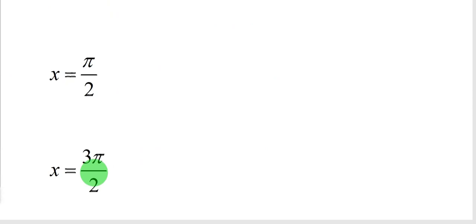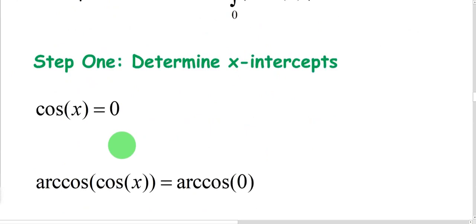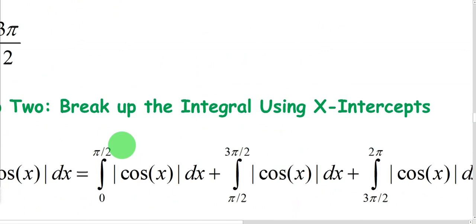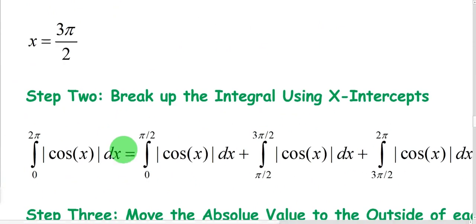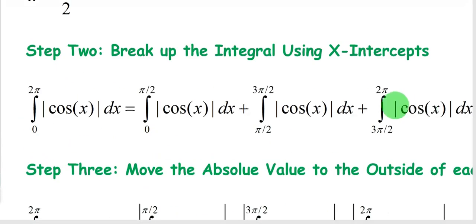So that's where this graph that's inside of the absolute value bars crosses the x-axis. That means we're going to split our definite integral up into those x-intercepts. So our original limits are from 0 to 2π, but because it crosses at these two places, we will end up with three different integrals.